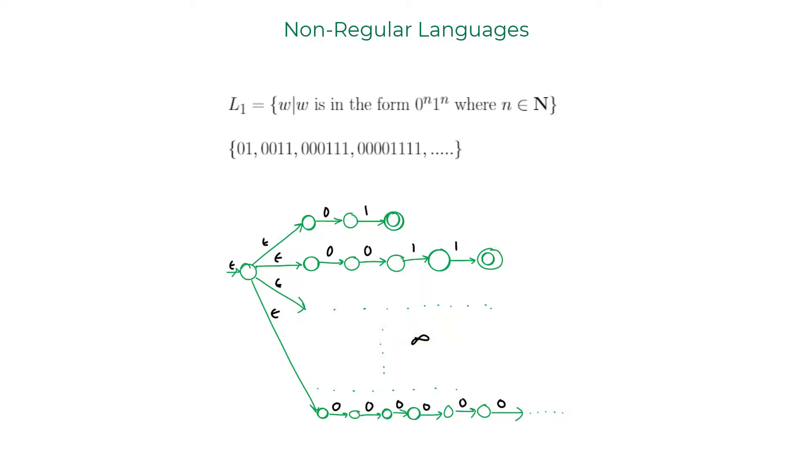And that's why we can say that we can't build a finite automaton for this. So this should be a non-regular language. But this is where things get fuzzy.